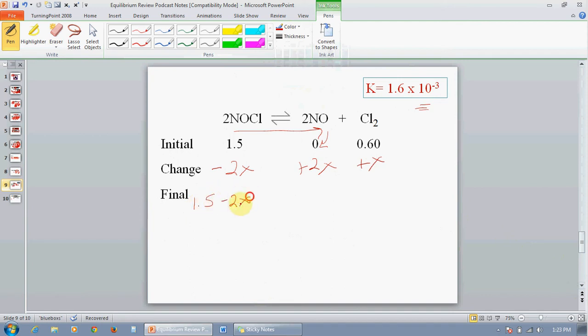So, 1.5 minus 2X, 2X, and X. If we go into our equilibrium expression and write our terms, 1.5 minus 2X squared, we now can do some simplification. Any X's that are added or subtracted to numbers can be removed. That's based on the idea that the change to reach equilibrium is going to be small. Since K is small, that means we're not going to shift forward to a very large degree. So, our change will be so small that any X's that are added or subtracted to numbers can be removed.